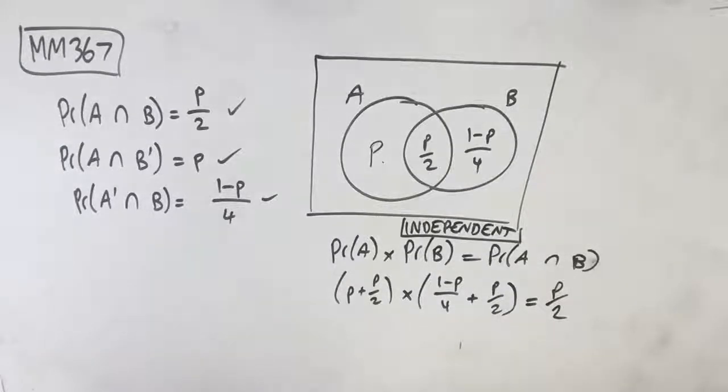Now, because we've got our CAS available to us and handy, chuck this in your calculator and solve for P. What you'll get is P equals 1 over 3, because P can't equal 0 since it's greater than 0.